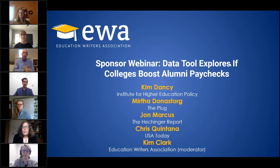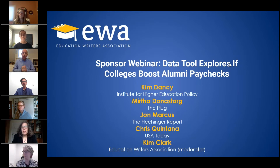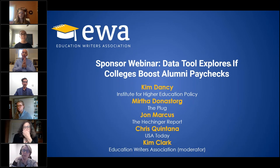The first is the Texas Public Policy Foundation, which can show you how much graduates of public universities nationwide are earning by major compared to how much they owe in student loans. The second is Third Way, which looks at how long it takes students to recover the cost of their educations — by major and institution, they call this the price-to-earnings premium. They found that about half of students will recoup their costs within five years, but more than half will never recover their costs over their earning careers.